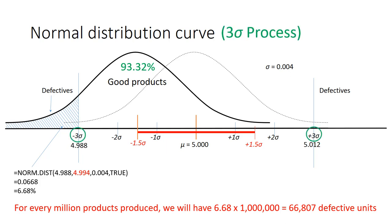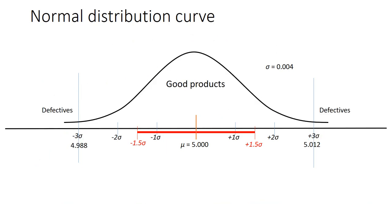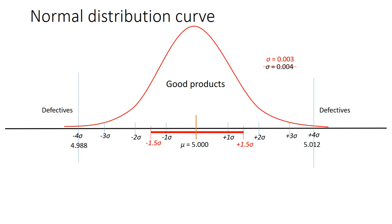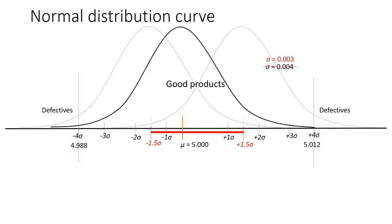Next, let us assume we have established some degree of control on the common causes of variation so we can reduce the standard deviation a little. Our new standard deviation is 0.003 inches, and the new normal distribution curve will be slightly narrower. We will still allow the mean to shift from minus 1.5 to plus 1.5 standard deviations.